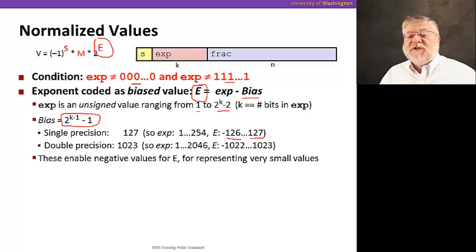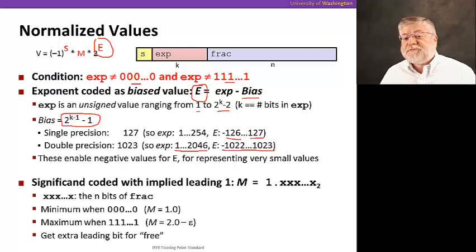For double precision, of course, we have eleven bits, so we go from one to two thousand forty-six, and the bias is going to be a thousand twenty-three. So that the exponents we can represent are minus one thousand twenty-two to positive one thousand twenty-three. So these enable both these large positive exponents for representing large numbers, and very small values by having a very negative exponent.